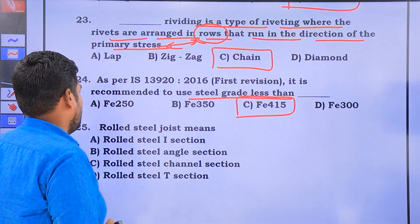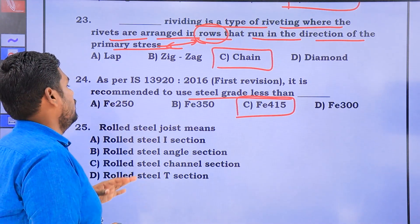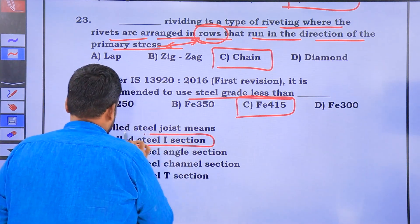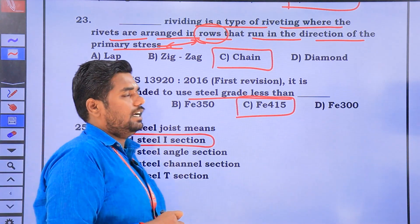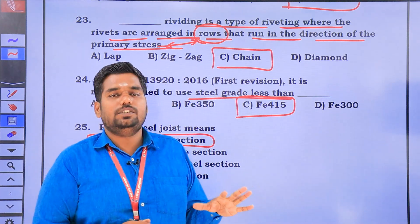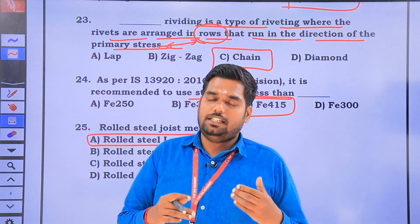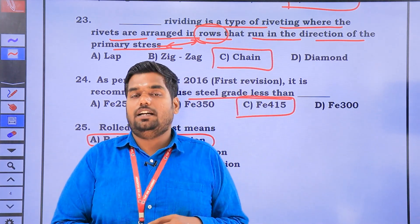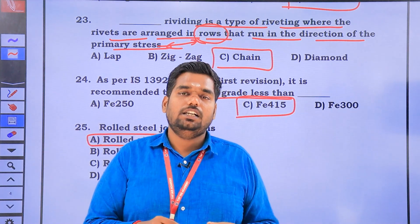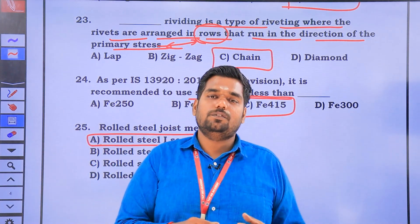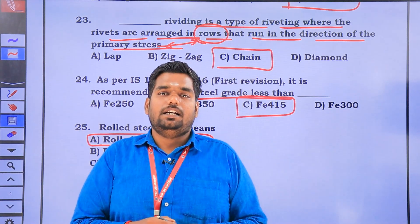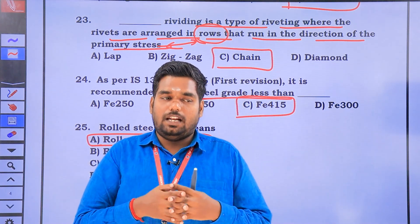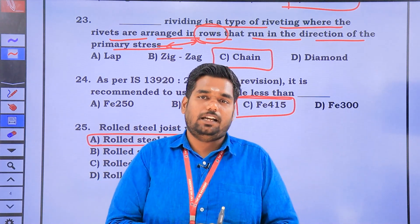A rolled joist means a rolled I-section. If you are studying the codebook IS 456, you can learn the relevant data in the MST. Using this explanation, you will see the same explanation on another day. Thank you.